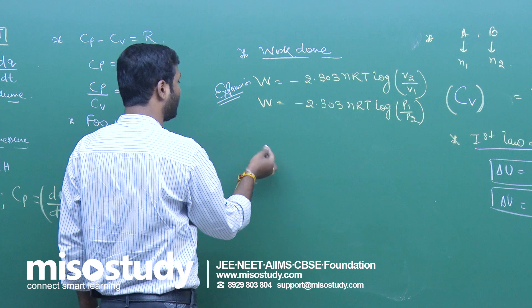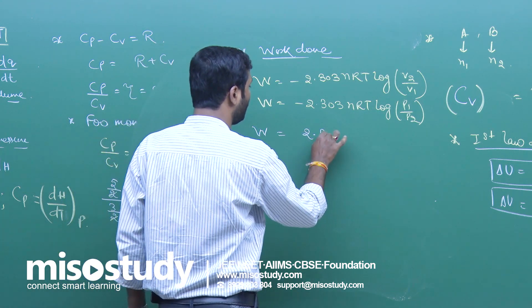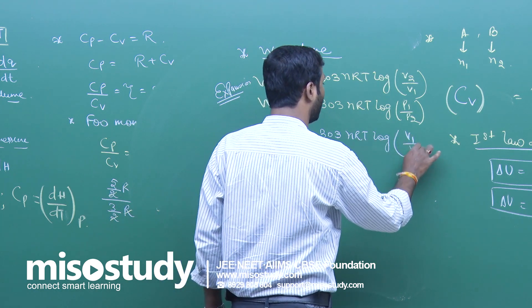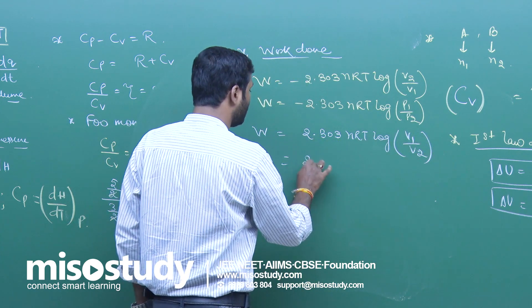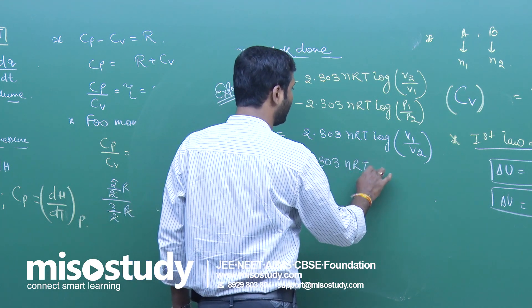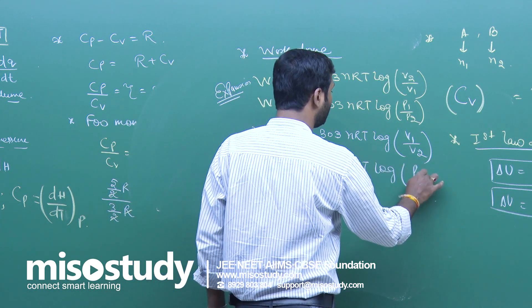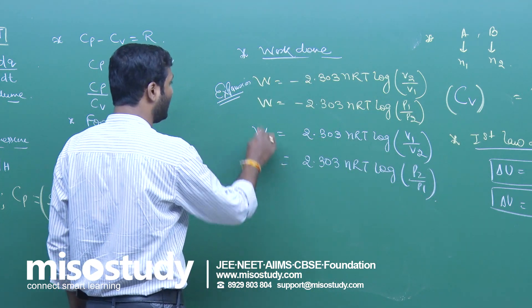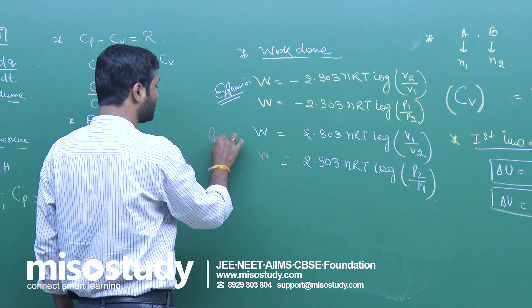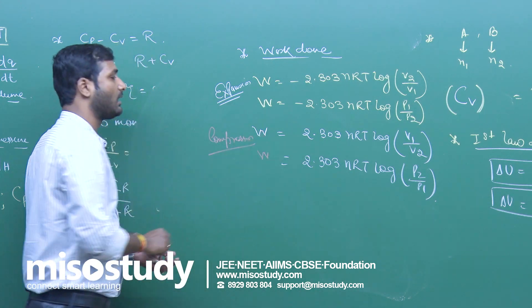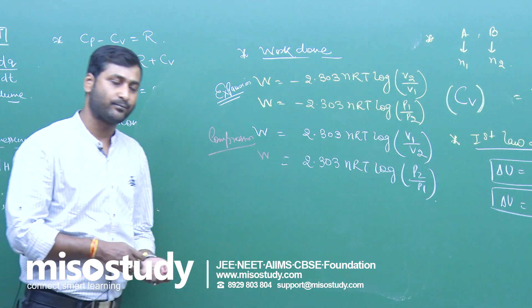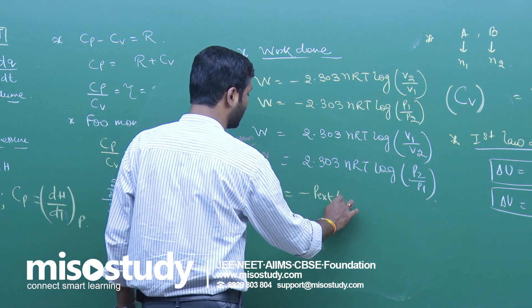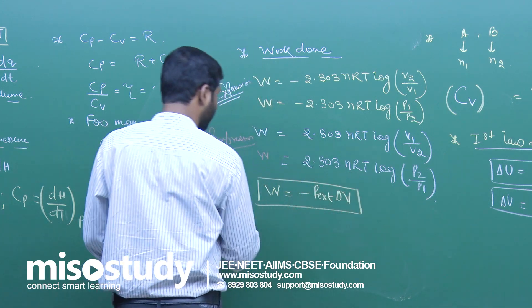For isothermal reversible compression, work done equals 2.303 nRT log(V1/V2) or 2.303 nRT log(V2/V1) — note the sign change. For an isothermal irreversible process, the formula is simply w equals minus P-external times delta V.